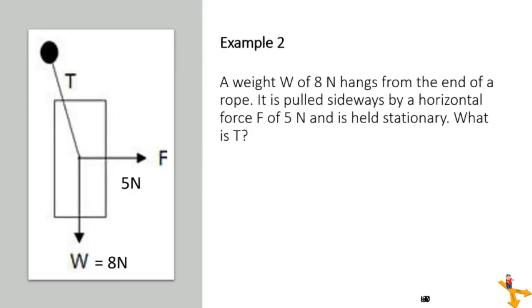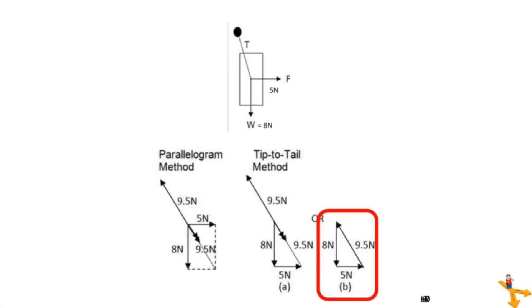Next example, a weight of 8 newtons hangs from the end of a rope. It is pulled sideways by a horizontal force F of 5 N and is held stationary. What is T? We can draw the figure using the parallelogram method and the tip-to-tail method, like what is shown in the picture below.